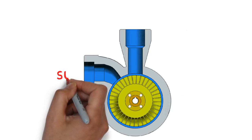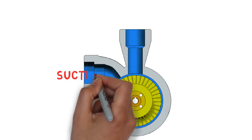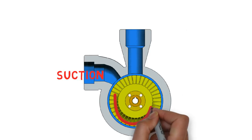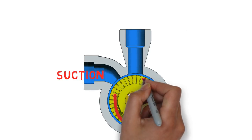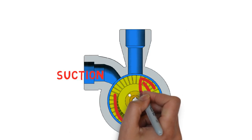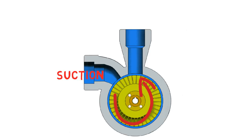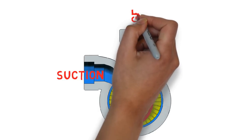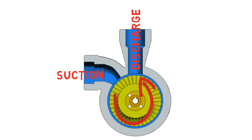On the suction side, liquid is gathered by the impeller's veins. After making only one revolution in the annular channel, the fluid has a high velocity that sends the liquid out the discharge.